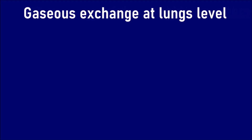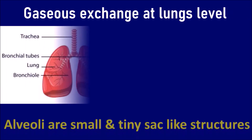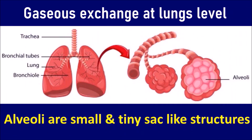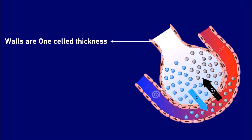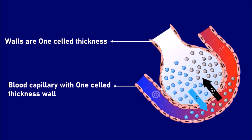Gaseous Exchange at Lungs Level. Lungs are made up of alveoli, which are considered as structural and functional units of lungs. These alveoli are small and tiny sac-like structures. The walls of the alveoli are one-cell thick. These alveoli are surrounded by numerous blood capillaries, which also constitute one-cell thick walls.